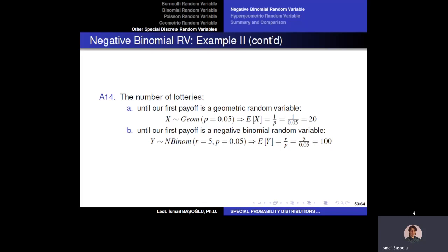This is the average number of plays, so it is not the exact value. We cannot say surely that we need to play exactly 100 lotteries to get our fifth payoff. This is the average number of plays we need to perform. Thank you.